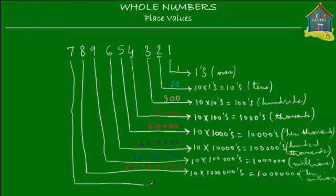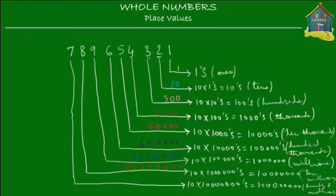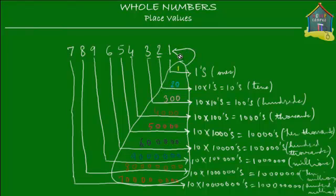And finally, the 7. Well, the 7 is 10 times 10,000,000. Now 10 times 10,000,000 is 100,000,000 — that's 100 followed by 6 zeros. So this is your 100,000,000's place. Since 7 is in the 100,000,000's place, its value is 700,000,000. Now when you add up all these numbers — 700,000,000, 80,000,000, 9,000,000, 600,000, 50,000, 4,000, 300, 20, and 1 — you will get this number.